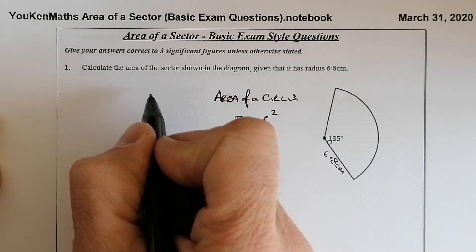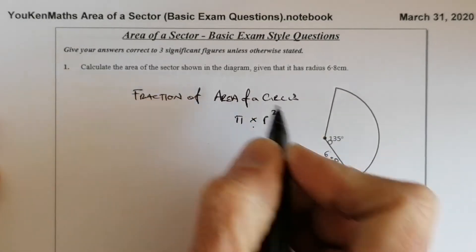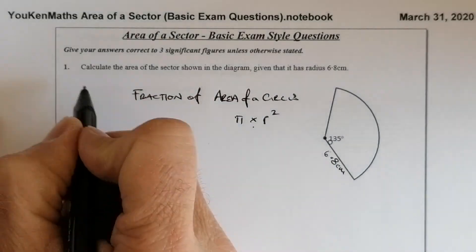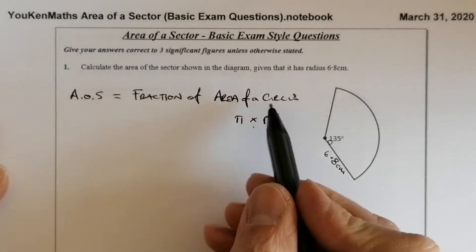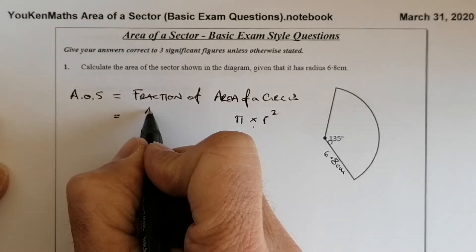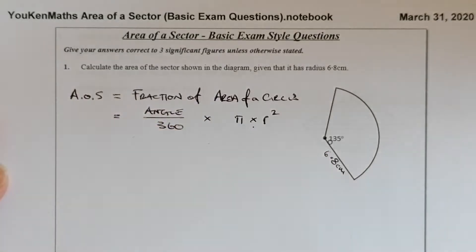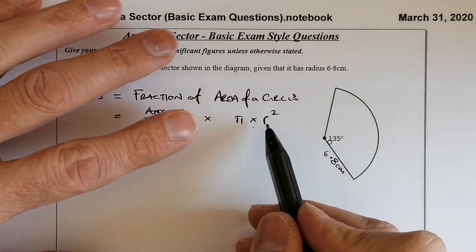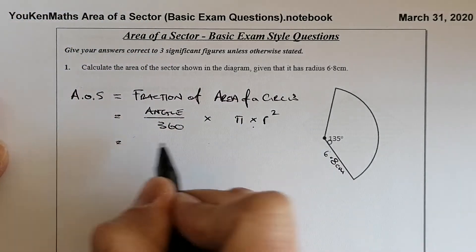The sector is only a fraction of the circle, not all of it. So I'm going to work out the fraction. The area of a sector is equal to the fraction of the circle area. The fraction we've got here is the angle at the centre divided by 360, multiplied by the formula for the area of a circle. So alternatively: get the area of a circle, work out the fraction of it.